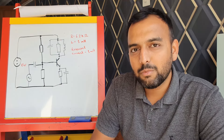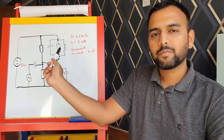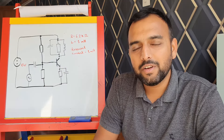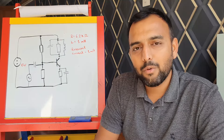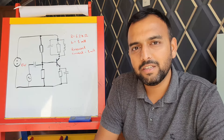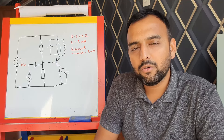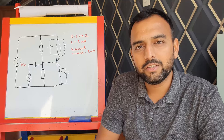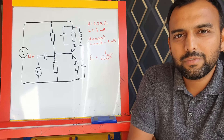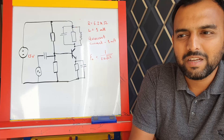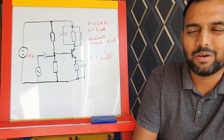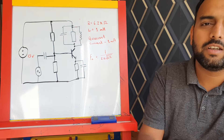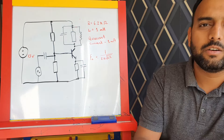First, we're going to calculate the capacitor value for the RLC part of the circuit. The equation for the resonance of an RLC circuit — assuming R doesn't exist, so essentially an LC circuit — is given by F0 = 1 over 2π times the square root of LC. We'll rearrange that equation to get C by itself, using the known inductor value and resonance frequency of 100 kilohertz with an inductance of 1 millihenry.